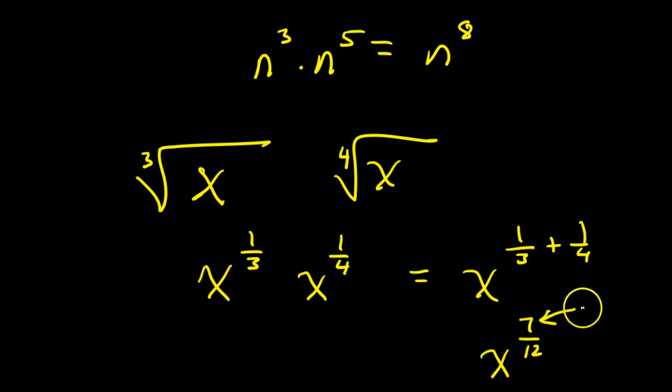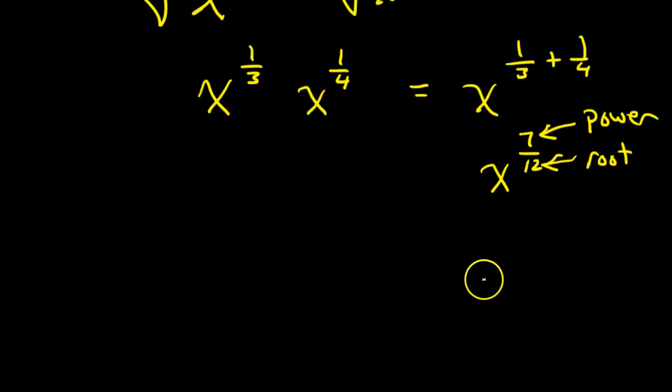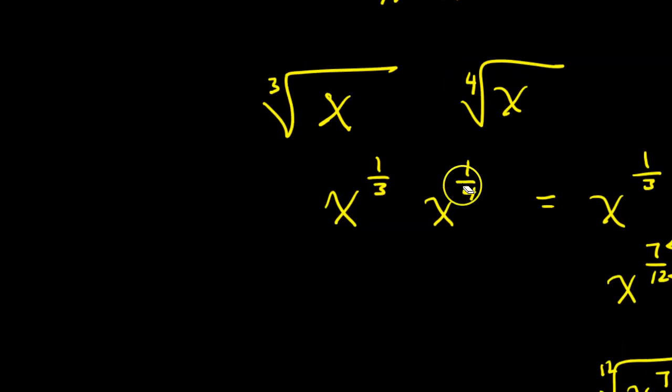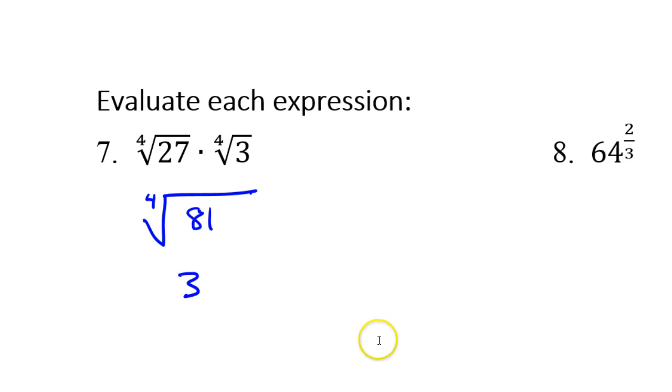Now, remember that this is the power and this number is the root. It's always power over root. So, we started with radicals, so we have to turn it back into radicals again. So, in the end, we would have the 12th root of x to the 7th power. That's what you would do if the roots were different, but the part underneath was the same. You are super welcome.